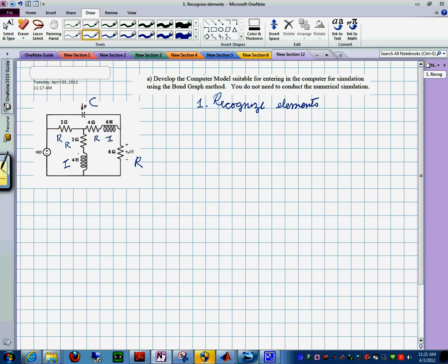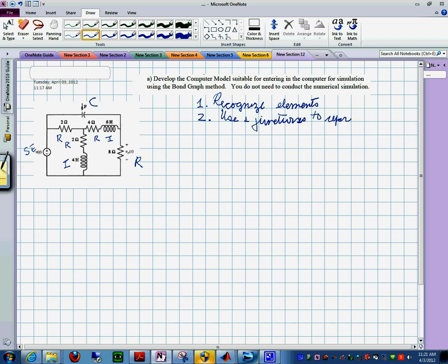And this is a source of effort in here. One clarification that is over here, we have the element. But the way we want to measure this is measuring the voltage across that R. So it's like putting a probe in there that you can do so. This is recognize the elements. Step two, we need to use a one junction to do what? To represent distinct currents.